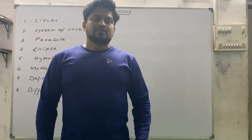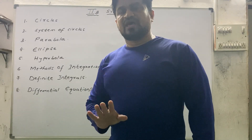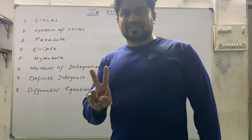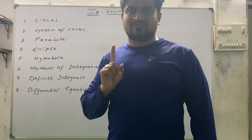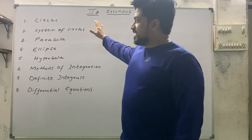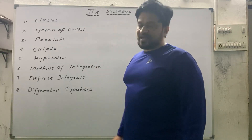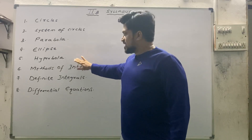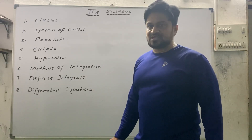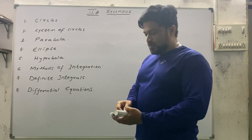Good morning. Now we are going to start the 2B syllabus. In 2B, we have a total of eight units. Same as in second year, you have two mathematics textbooks: 2A and 2B. In first year you had 1A and 1B. This 2B is a continuation of 1B. The eight units are: Unit 1 Circles, Unit 2 System of Circles, Unit 3 Parabola, Unit 4 Ellipse, Unit 5 Hyperbola, Unit 6 Method of Integration, Unit 7 Definite Integrals, and Unit 8 Differential Equations.